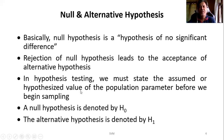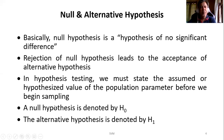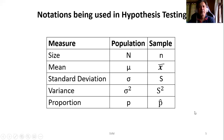In hypothesis testing, we must state the assumed or hypothesized value of the population parameter before we begin the sampling. All these hypothetical statements need to be fixed before we start doing our sampling. Null hypothesis is denoted by H0, and alternative hypothesis is denoted by H1 — sometimes also denoted by HA. These are the notations generally being used in hypothesis testing.